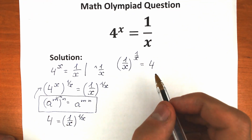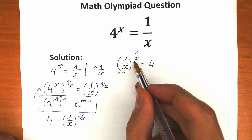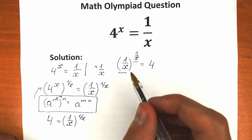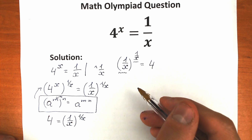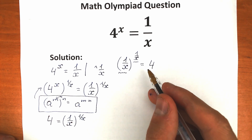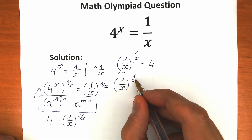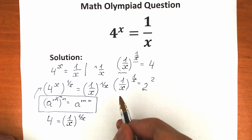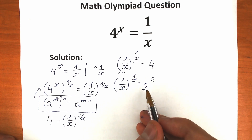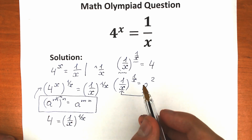Now here is a really interesting moment. How can we solve this expression? We have the same base and the same exponent — this is the key moment. We can express 4 as 2 to the power 2. So we have 1 over x to the power 1 over x equal to 2 to the power 2. Same base and same exponent on the left, same base and same exponent on the right. The one and only way this equation has roots is when base equals base and exponent equals exponent.